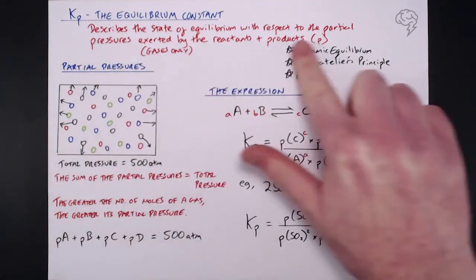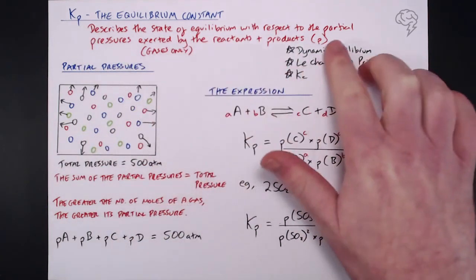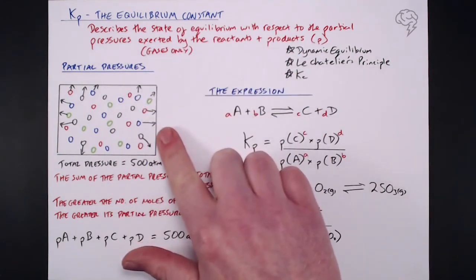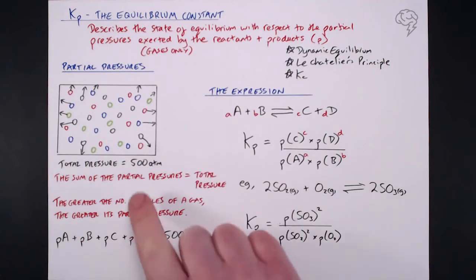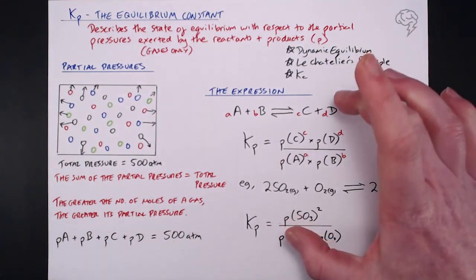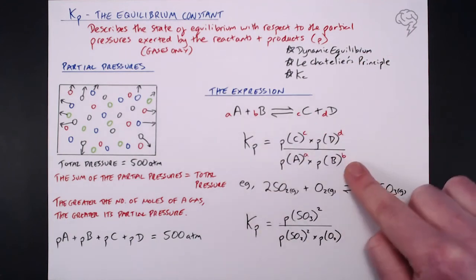So overall, what we've got is a definition. It's the state of equilibrium with respect to the partial pressures exerted by the reactants and products. So we're only looking at the gases in here. What are partial pressures? Well, it's the individual pressures that each of the gases exerts on the inside of that vessel. The greater the number of moles of a gas, the greater its partial pressure. And a really important piece of information that the total partial pressures, all the partial pressures added up together basically equal the total pressure.